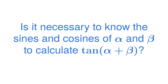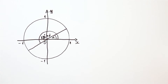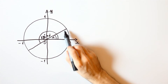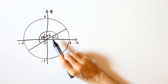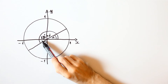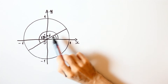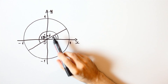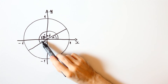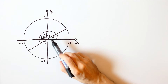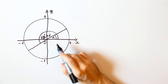But is it necessary to know the sines and cosines of alpha and beta to calculate the tangent of alpha plus beta? This part is a bit tricky. If we know the tangent of alpha, can we calculate the sine and the cosine of alpha? Well, 180 degrees plus alpha has the same tangent as alpha, but the sines and the cosines are different. So which one is it — alpha or 180 degrees plus alpha? Or maybe it's some other angle that has the same tangent.